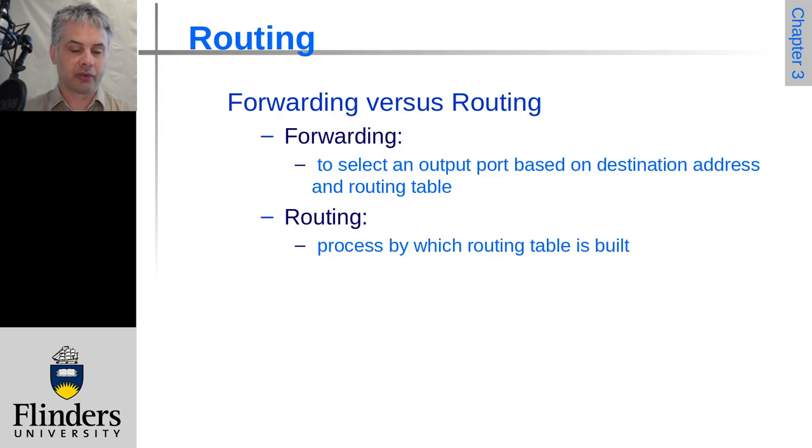So let's have another look at routing again. There's two key concepts here that we need to look at. Routing is the process by which we build the list of paths that can be used to get somewhere. And forwarding is the actual process of moving a packet towards its intended destination.